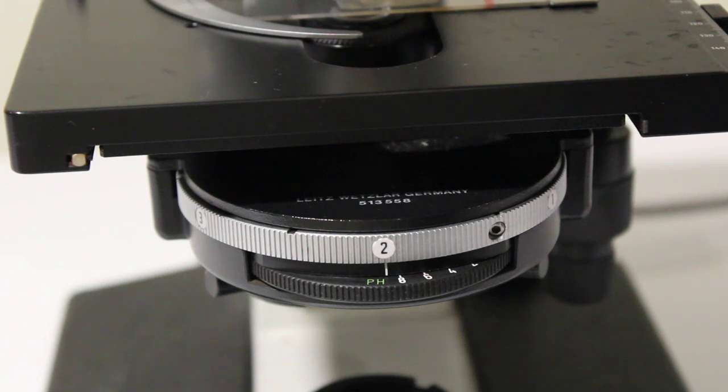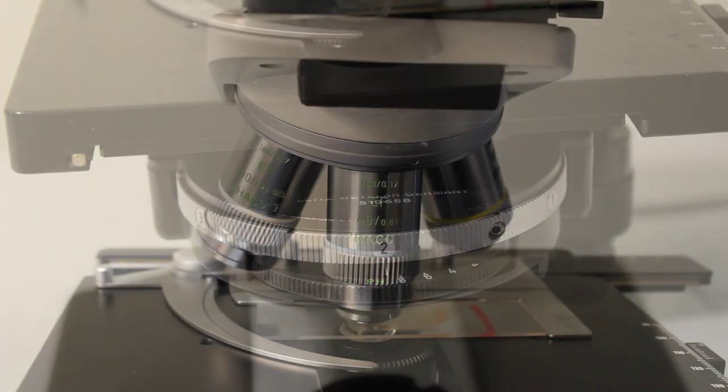So it does make it a lot easier to find cells and count cells. It's a little easier to analyze bacterial morphology than just with a straight wide field microscope but it's really not something you need in a brewery microscope.